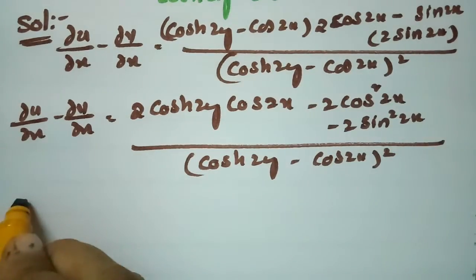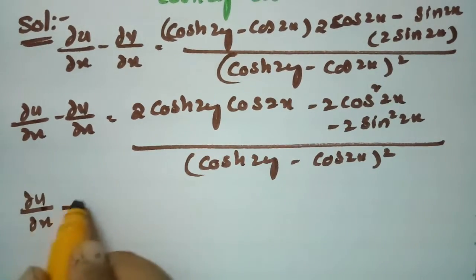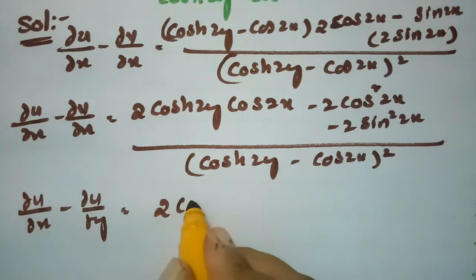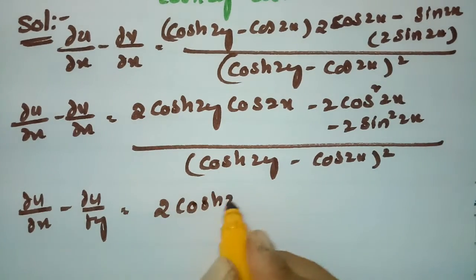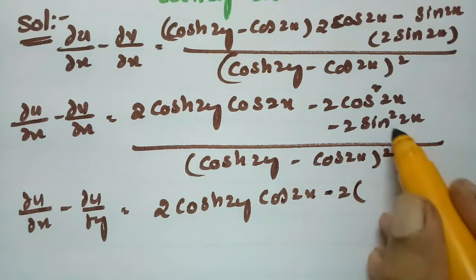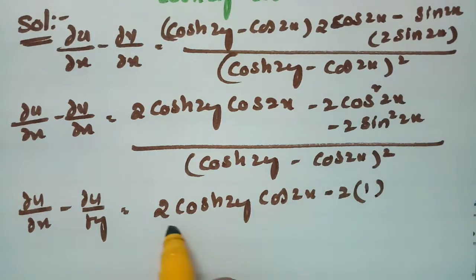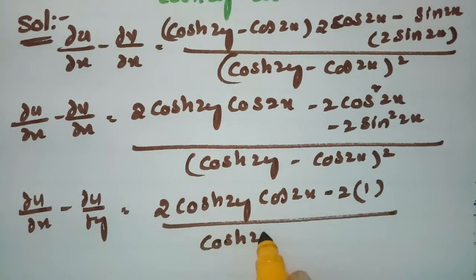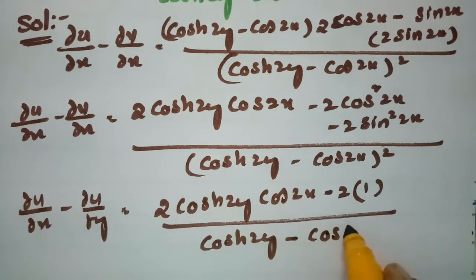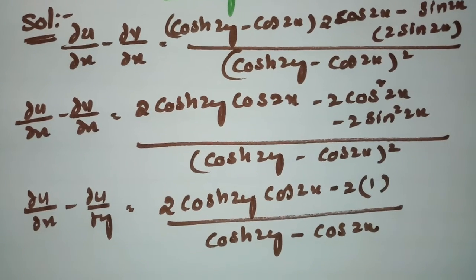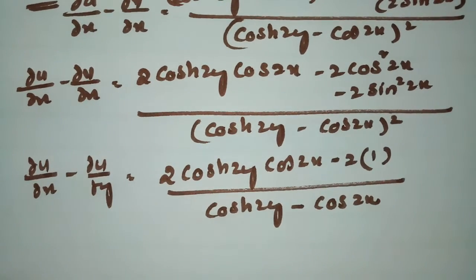So dou(u)/dou(x) - dou(v)/dou(x) simplifies to 2·(cosh(2y)·cos(2x) + sin²(2x) + cos²(2x)) / (cosh(2y) - cos(2x))². Since sin²θ + cos²θ = 1, this becomes 2·(cosh(2y)·cos(2x) - 1) / (cosh(2y) - cos(2x))². I am naming this equation 1.